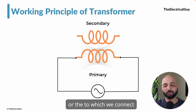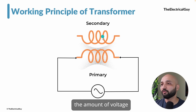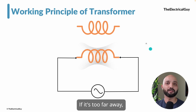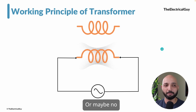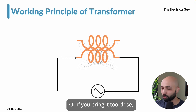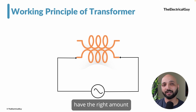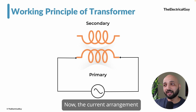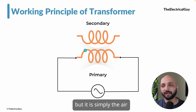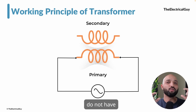There is electrical isolation between the two windings but still voltage across both coils. The coil connected to the source side is called the primary coil, and the coil on the other side — to which we connect the load — is called the secondary. The amount of voltage induced in the secondary depends on how close or far it is from the primary. Too far means less or no voltage — poor coupling. The current arrangement where only air exists between the coils is called an air core transformer.